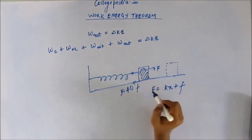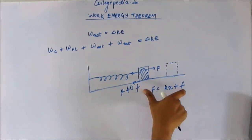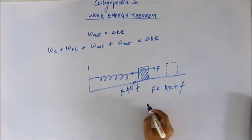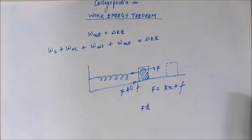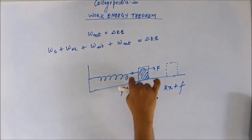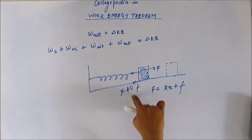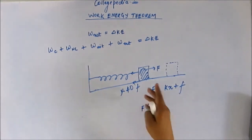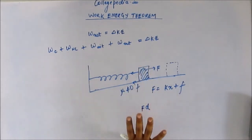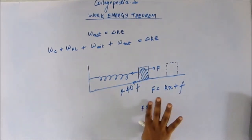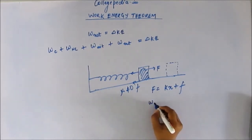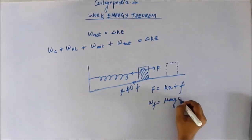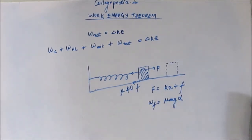When we displace the block by a distance d, the work done by the external force is F into d. The frictional force remains constant because it depends on the normal reaction, which is constant here. So the work done by friction can be calculated directly as mu times N, which is mu times mg times the displacement.